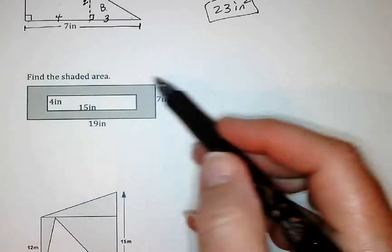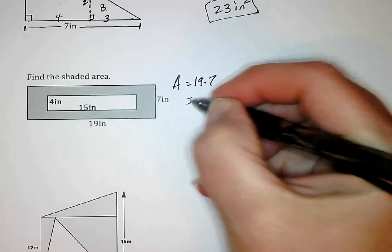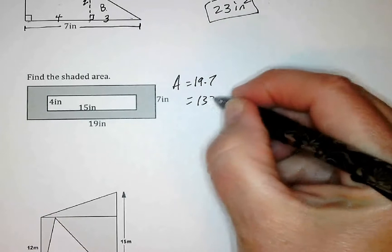To do that, I need to find the area of the whole thing, which is going to be a rectangle, so that's going to be 19 times 7. 19 times 7 is 133.